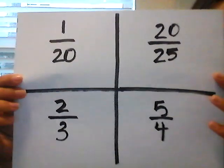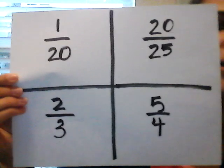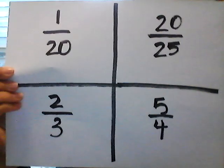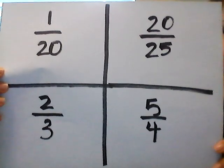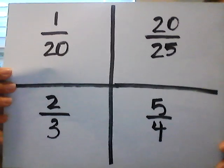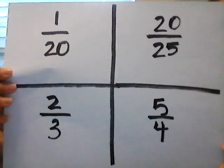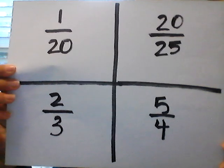Here is the next set of fractions to discuss. You should be pausing the video and having discussions with a sibling, a parent, or anyone else who is in your home with you. Our next set of fractions: you're going to discuss which one of these four does not belong with the other three. We have one-twentieth, twenty-twenty-fifths, two-thirds, and five-fourths. Pause the video and discuss it now with someone with you. You better actually be pausing it — that's all I'm going to say.